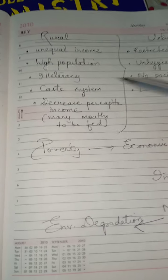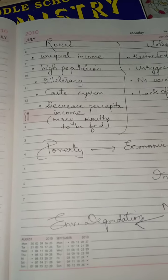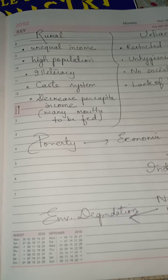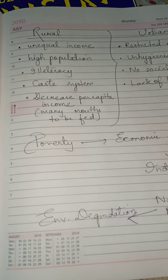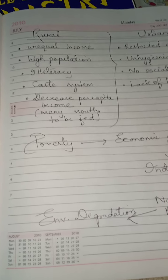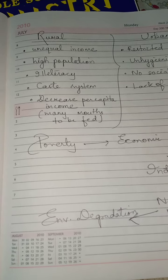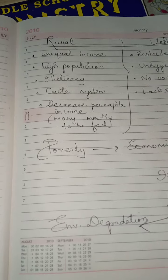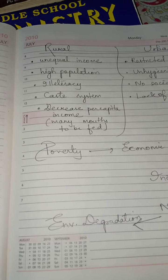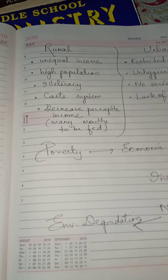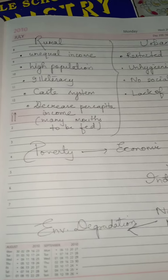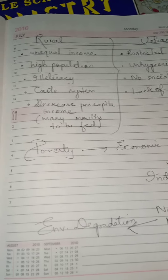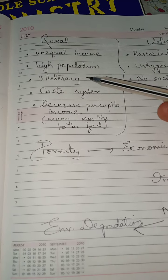The second cause of rural poverty is high population growth. People are unaware of proper family planning, resulting in high population with a huge number of mouths to be fed, while the source of income from a person is only one.